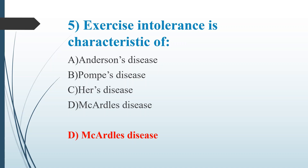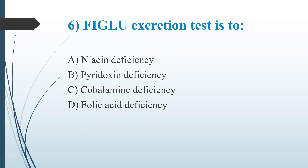Sixth question: The FIGLU excretion test is used for — Option A: Niacin deficiency. Option B: Pyridoxine deficiency. Option C: Cobalamin deficiency. Option D: Folic acid deficiency. The answer is Option D, folic acid deficiency.